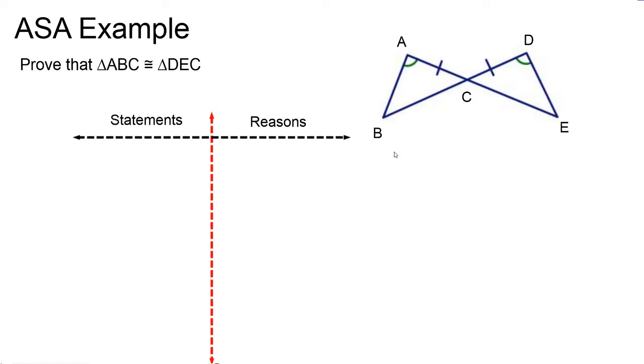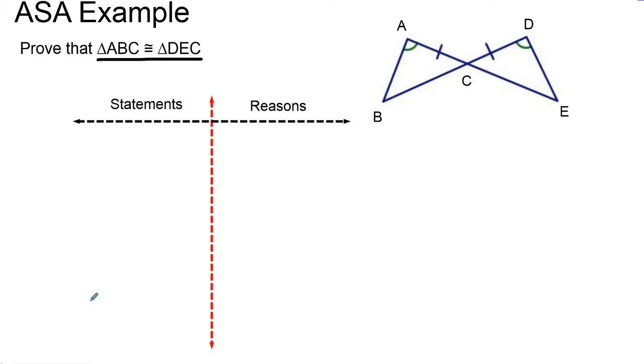Alright, let's go ahead and do a practice proof of ASA. I know my end goal, so I'm going to write that down at the bottom here. My goal is to prove that triangle ABC is congruent to triangle DEC. That's my end statement.